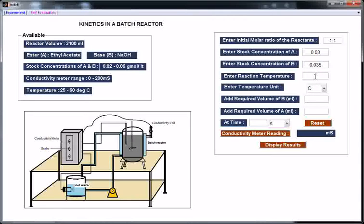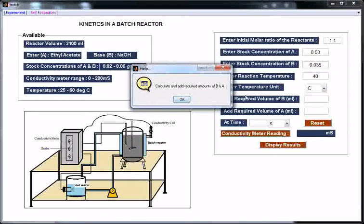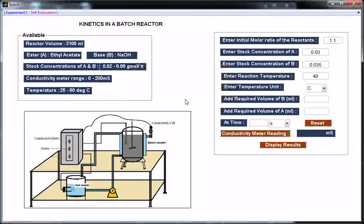Enter reaction temperature. Let us conduct experiment at 40 degree Celsius. Calculate and add required amounts of B and A. Add required volume of B.